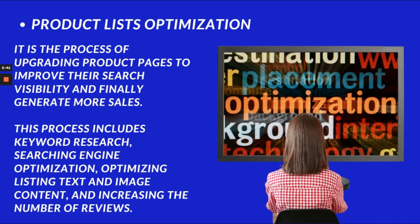Product listing optimization is the process of upgrading product pages to improve their search visibility and generate more sales. This process includes keyword research, search engine optimization, optimizing listing text and image content, and increasing the number of reviews.